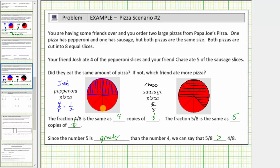Again, going back to the pizza one last time, because both Josh and Chase ate slices of pizza the same size, and Chase ate more slices, we know that Chase ate more pizza.